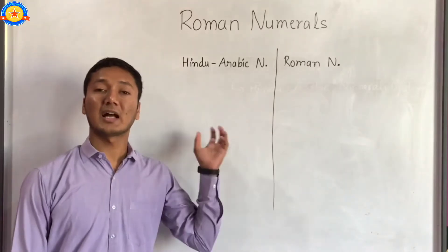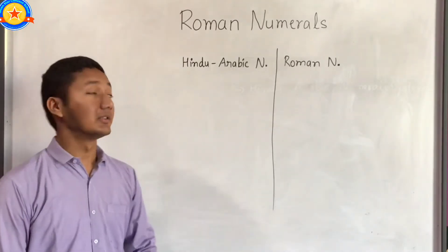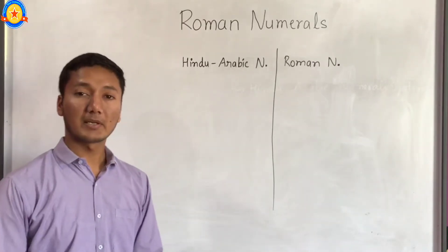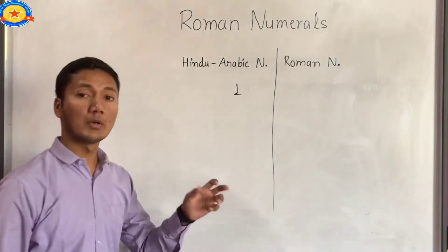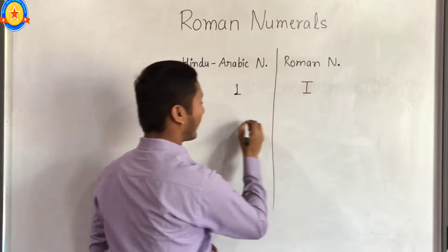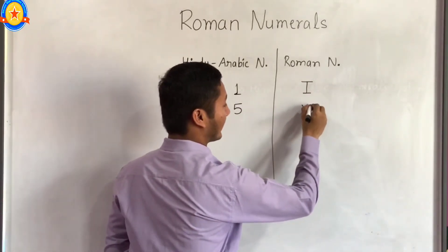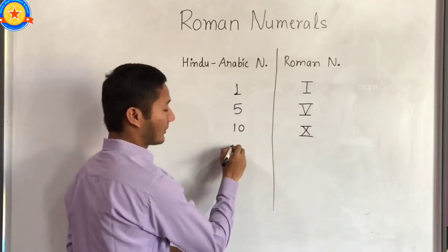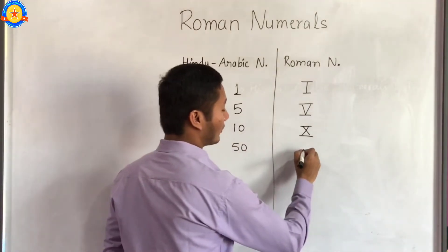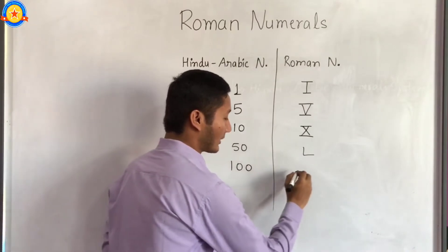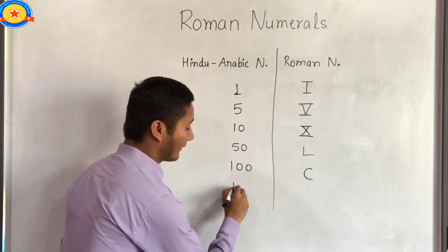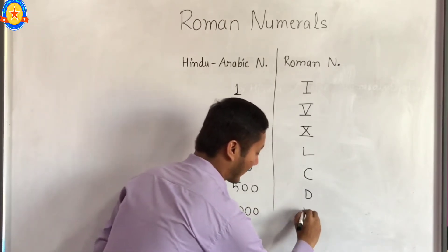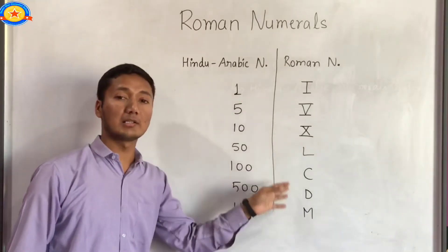In Roman numbers there are 7 different symbols for numeration. These symbols look like English letters. For representing 1, the Roman numeral is I. For 5, it is V. For 10, it is X. For 50, it is L. For 100, it is C. For 500, it is D. And for 1000, it is M. These are the 7 different symbols in Roman numbers.